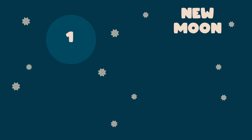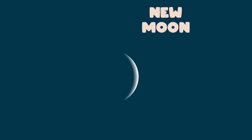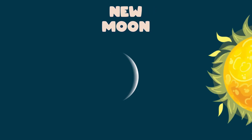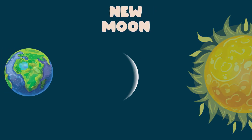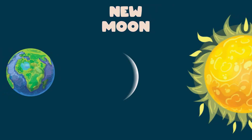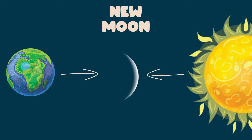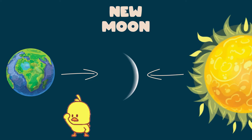New Moon: this happens when the moon is between the sun and the earth. The illuminated face is in the direction of the sun and the dark side is in the direction of the earth. Therefore, we do not see it.